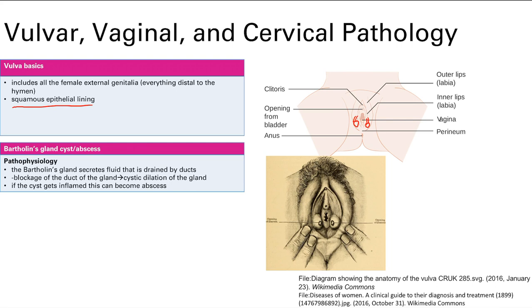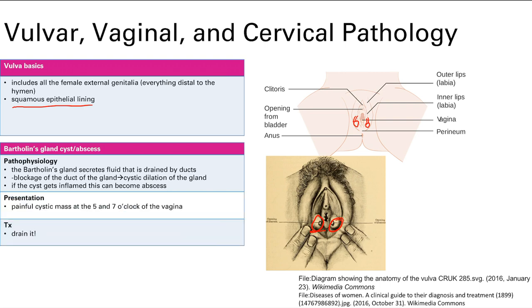If the cyst gets infected, that's an abscess — a ball of pus and bacteria. Presentation: you'll see a woman with a painful cystic mass at the five o'clock or seven o'clock location, or described as being in the lower vagina. Treatment: you drain it. Antibiotics don't work because they can't reach the inside of the abscess.